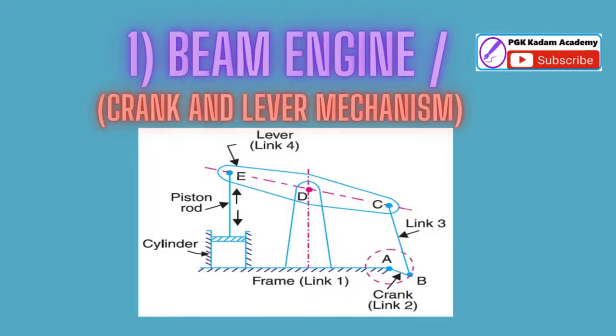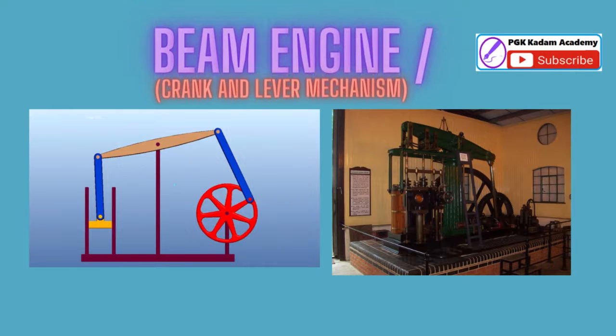In this mechanism, when the crank rotates about the fixed center A, the lever oscillates about a fixed center D. The end of the lever CDE is connected to a piston rod which reciprocates due to the rotation of the crank. In other words, the purpose of this mechanism is to convert rotary motion into reciprocating motion.